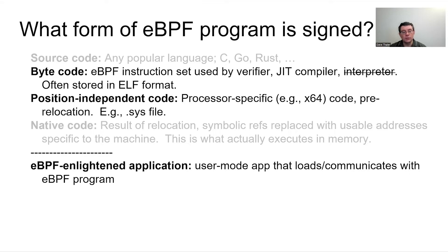In theory you could also sign the native code after relocation, but that's not very interesting because relocation replaces things with machine-specific addresses, so a signature would only be useful for that particular machine at a particular point in time. A different style of approach is to not sign the eBPF program per se, but rather to sign the thing that generates it — if the program is hard-coded into a user-mode application or generated from one, you just sign the application, and then any programs it runs might be authorized.